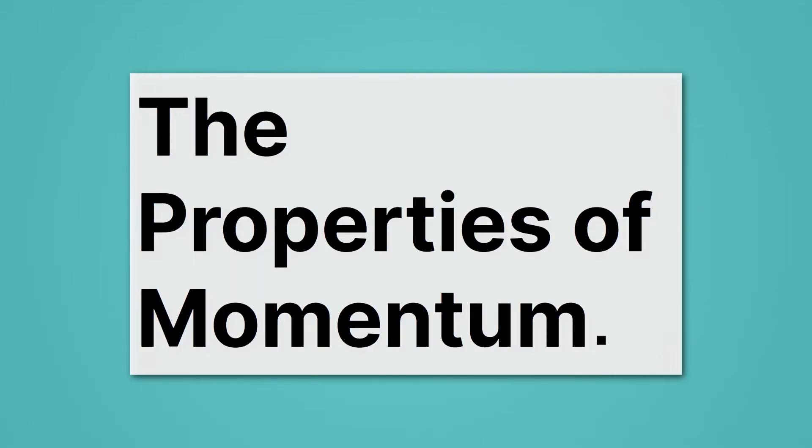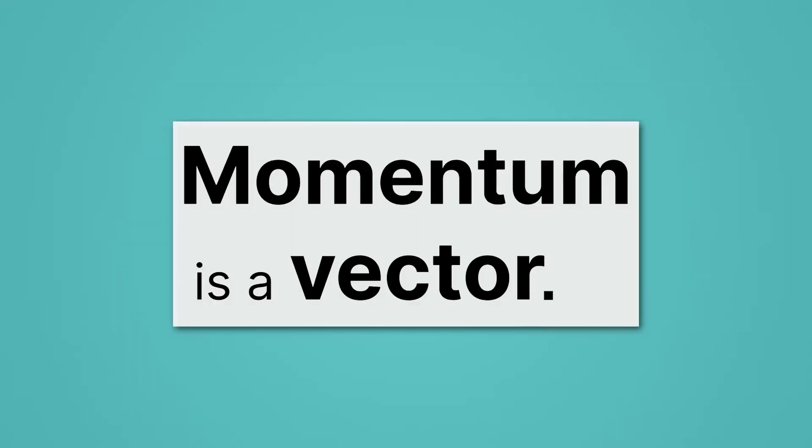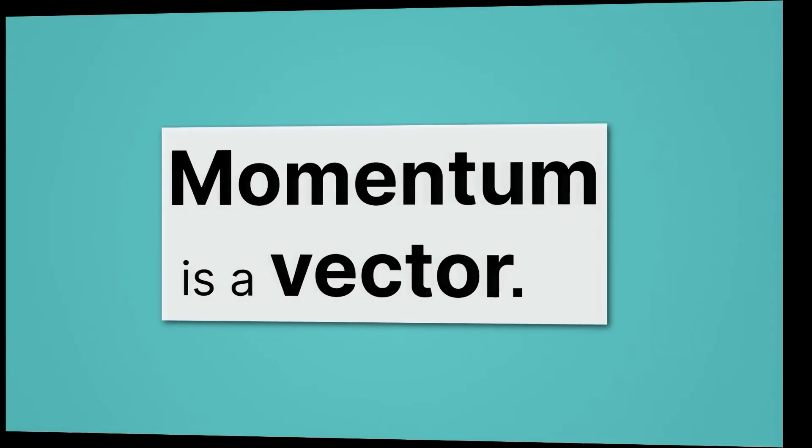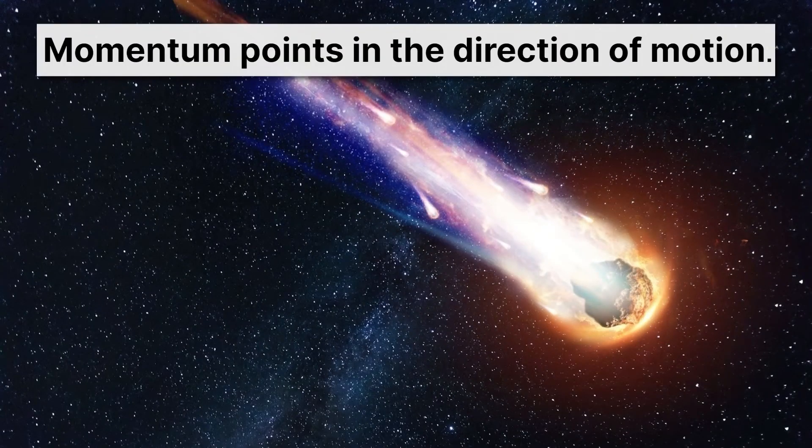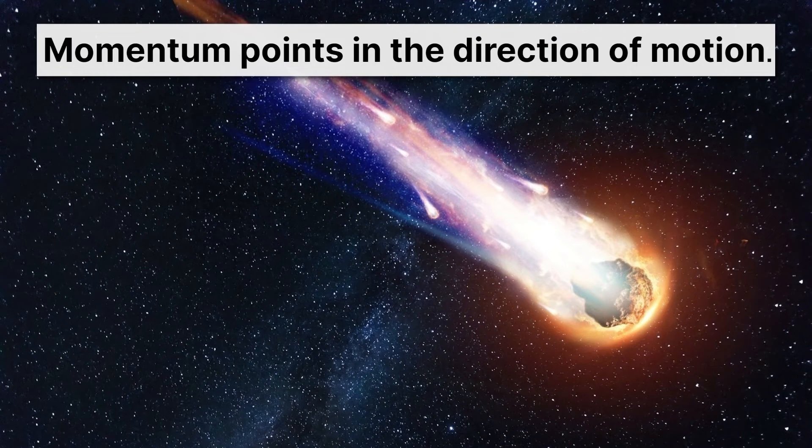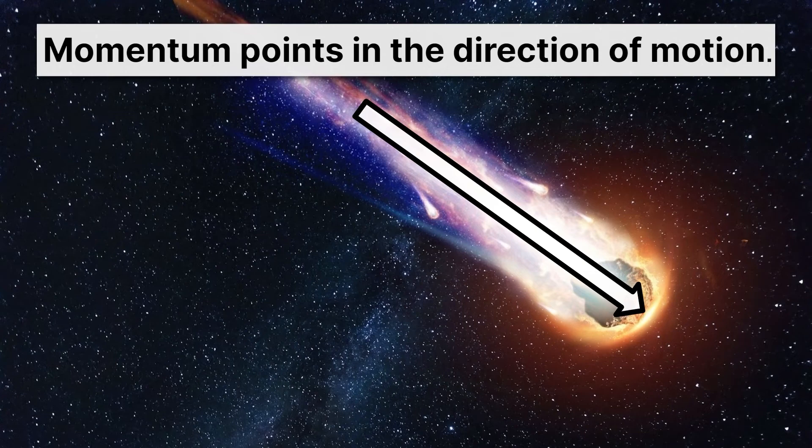Now let's review the properties of momentum. One thing you need to remember about momentum is that momentum is a vector. That means, basically, it has a direction. So momentum points in the direction of motion. So here we have a comet flying through space, and its momentum is going to be in the direction of motion, which that tail makes very easy to visualize.